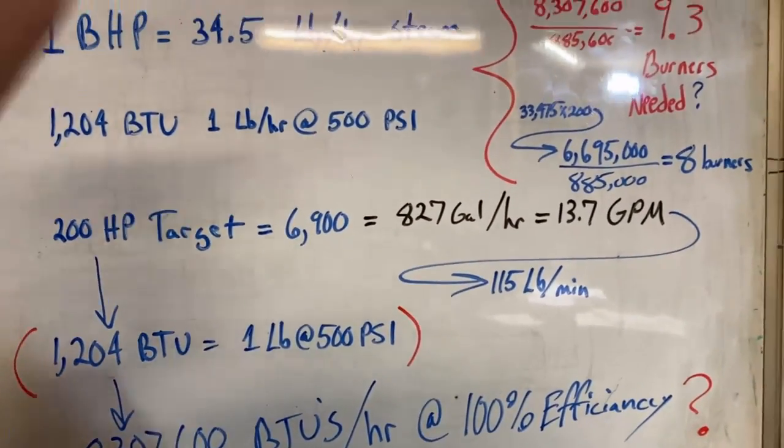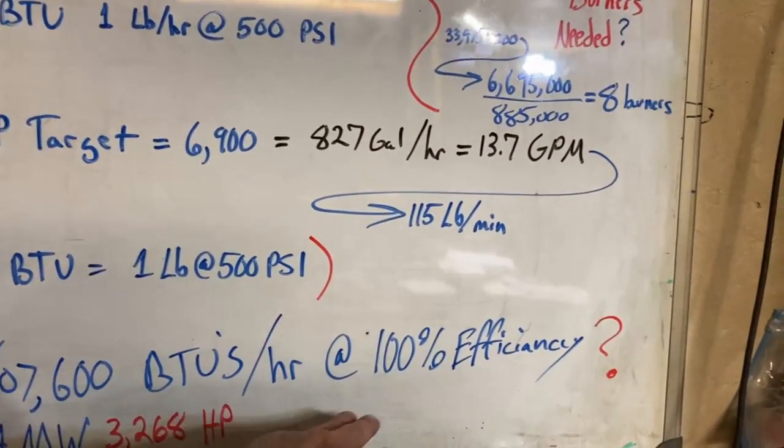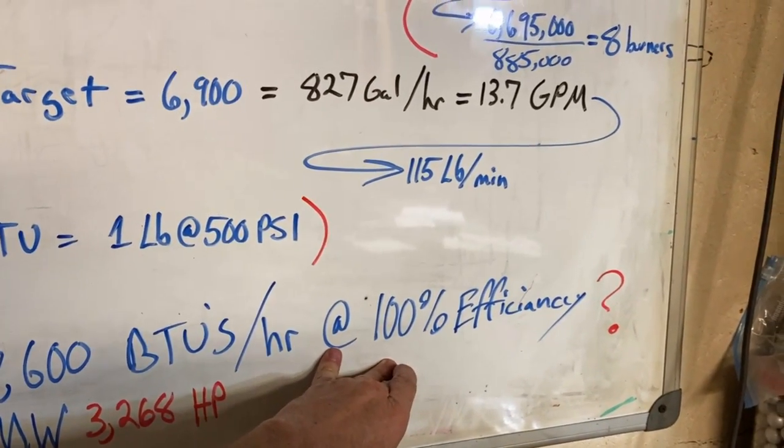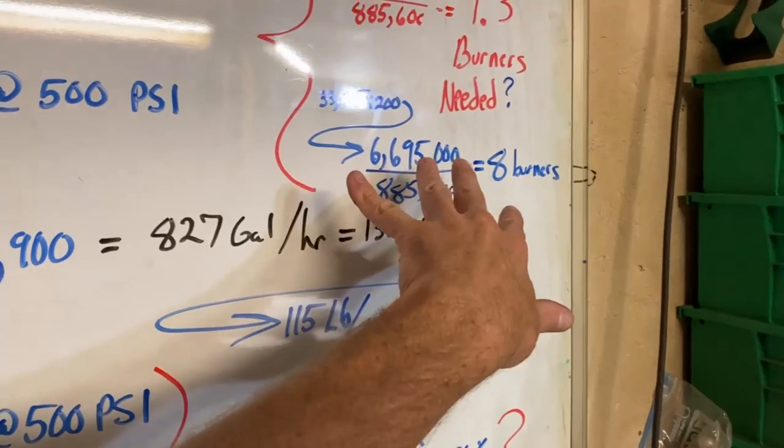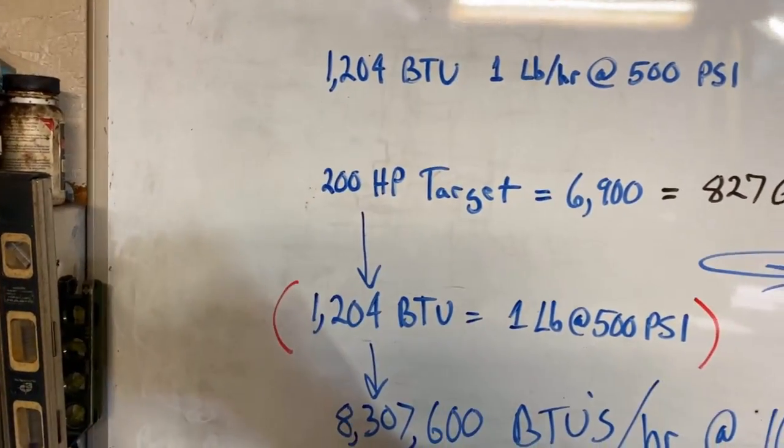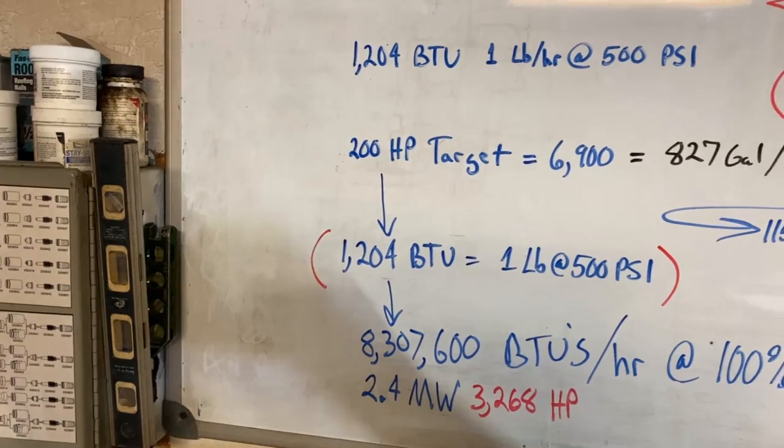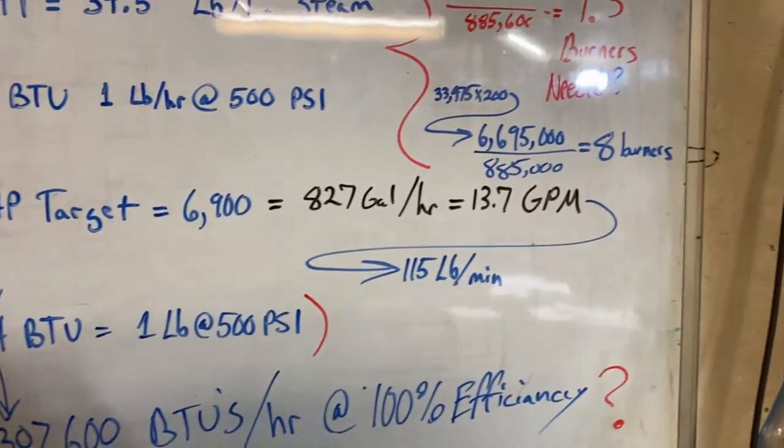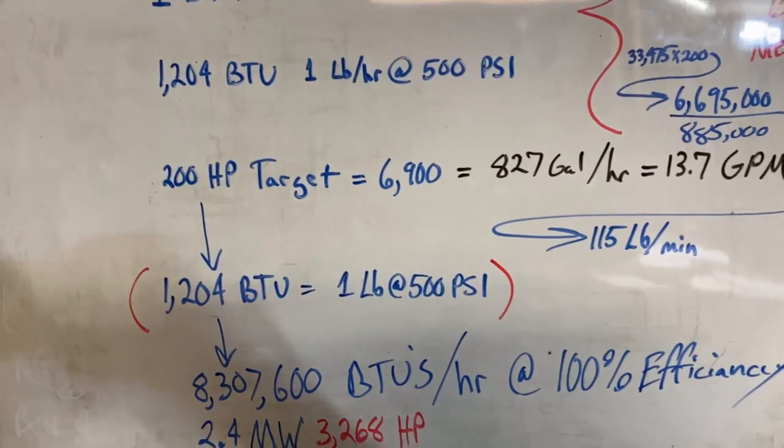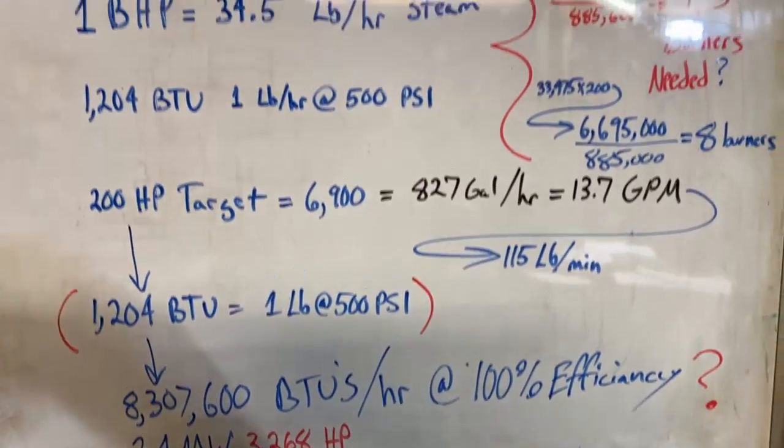But I just wanted to show you the efficiency factor, because if that boiler is not 100% efficient and it won't be, we will actually need more of these burners to do this. It may not take 200 horsepower to do what we're going to do, but some people in the know are saying it takes a minimum of 200 horsepower to pull that off.